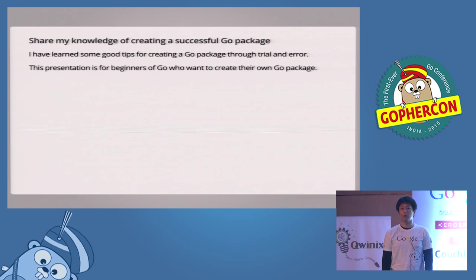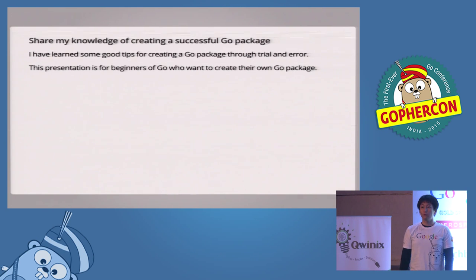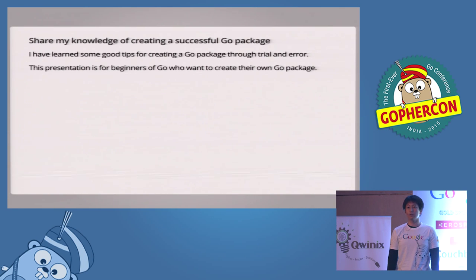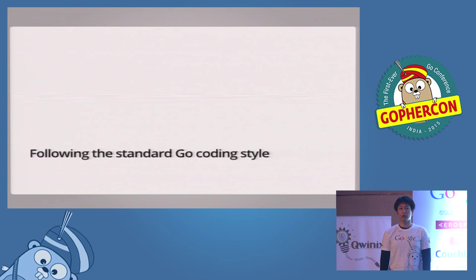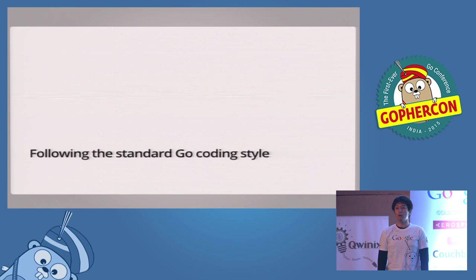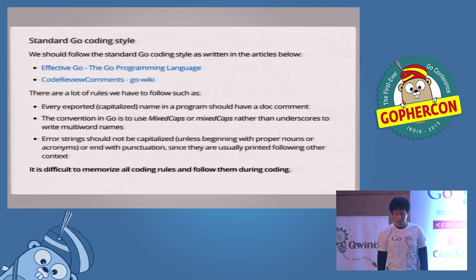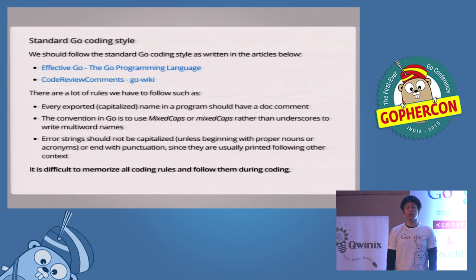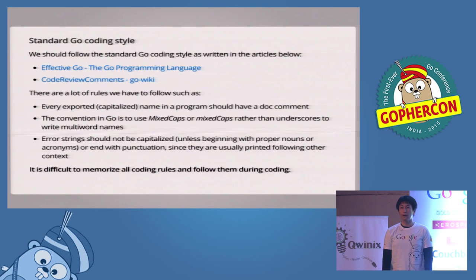The first tip I'd like to share is about following the standard Go coding style. We should follow the standard Go coding style as written in the articles of Effective Go and code review comments. There are a lot of rules, such as every exported name in a program should have a doc comment. It's difficult to memorize and follow all of them during coding. We can solve this issue by using GoLint. GoLint is a linter for Go source code. It checks to see if source code is following the standard Go coding style or not. When it finds some mistakes, it prints them out as shown on the slide here.